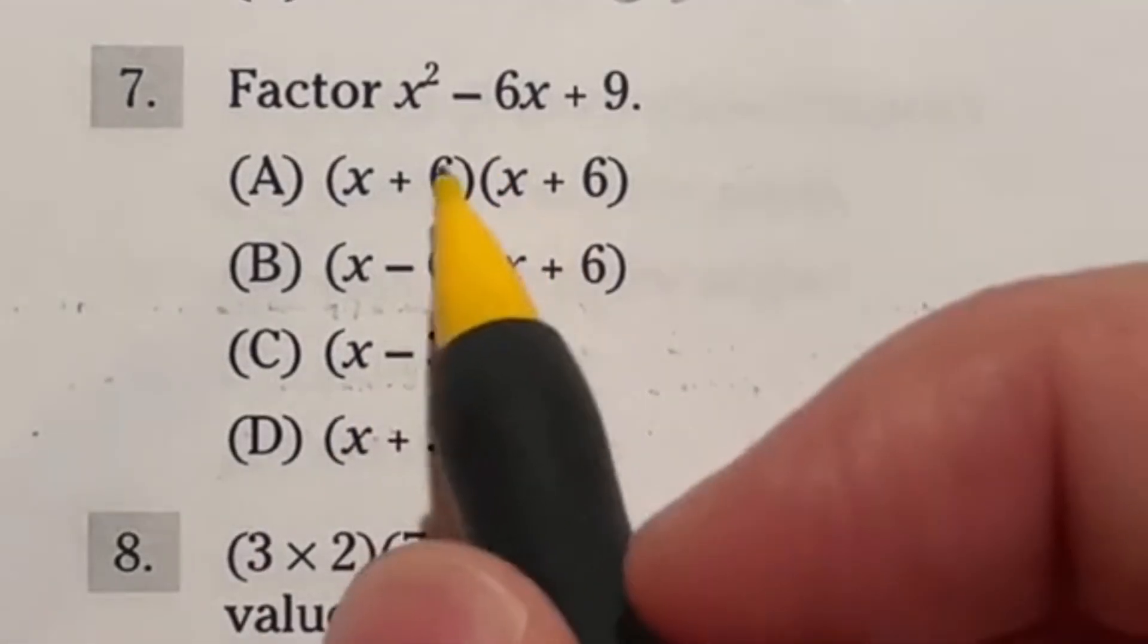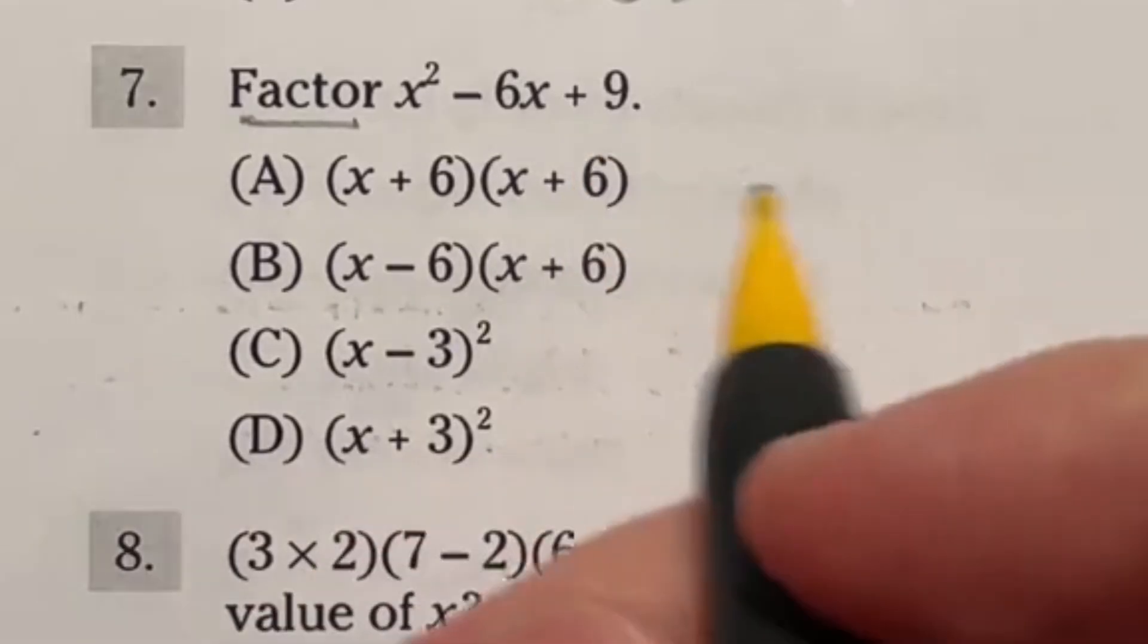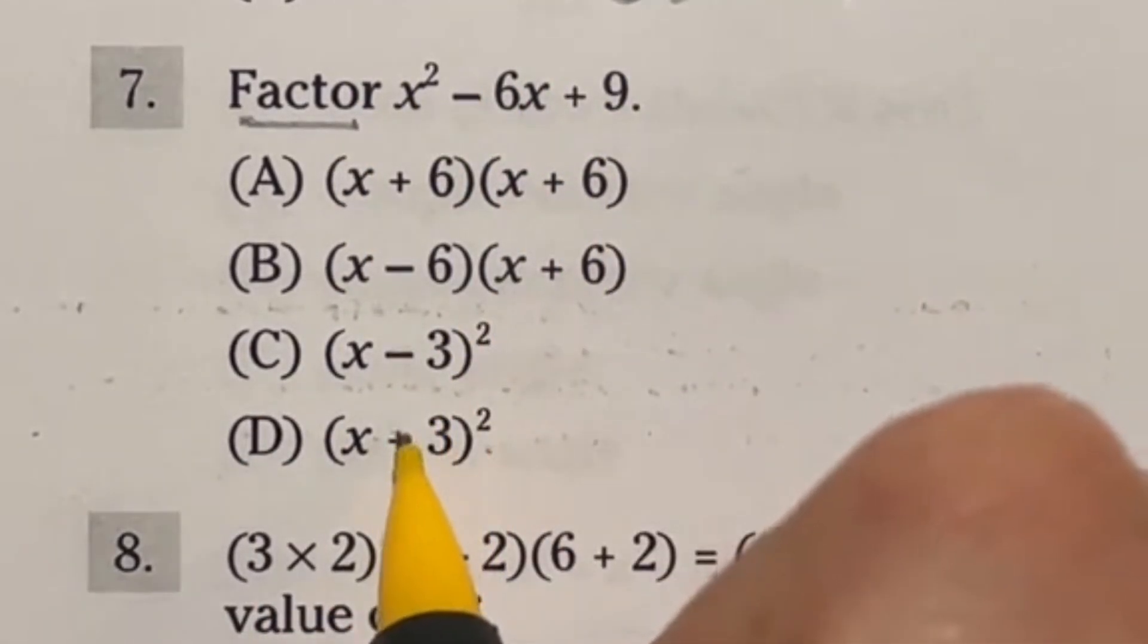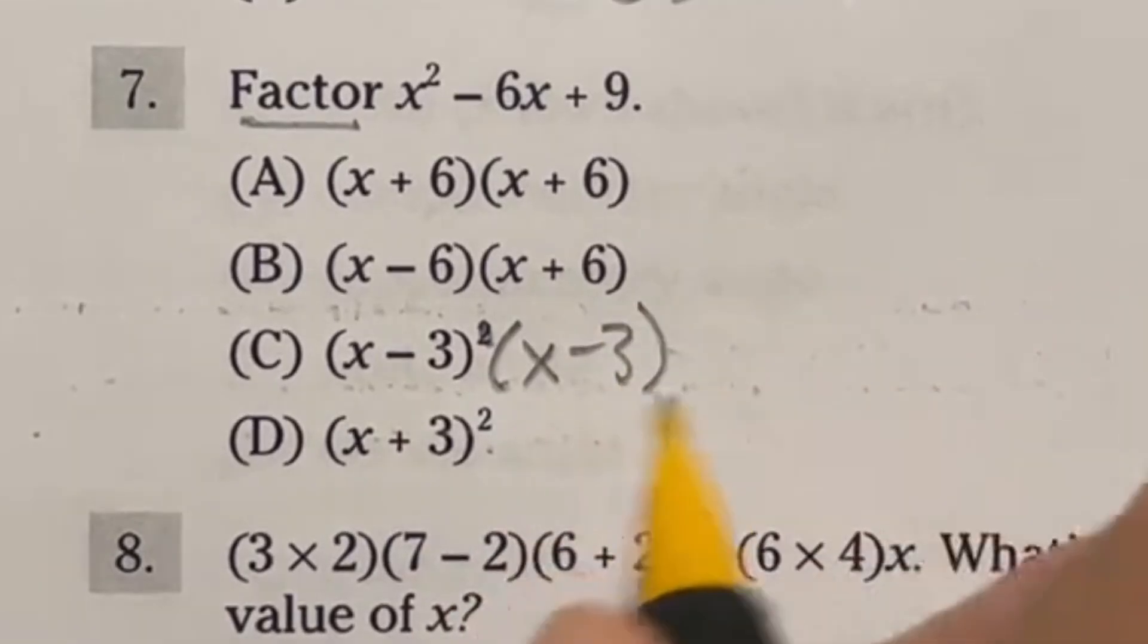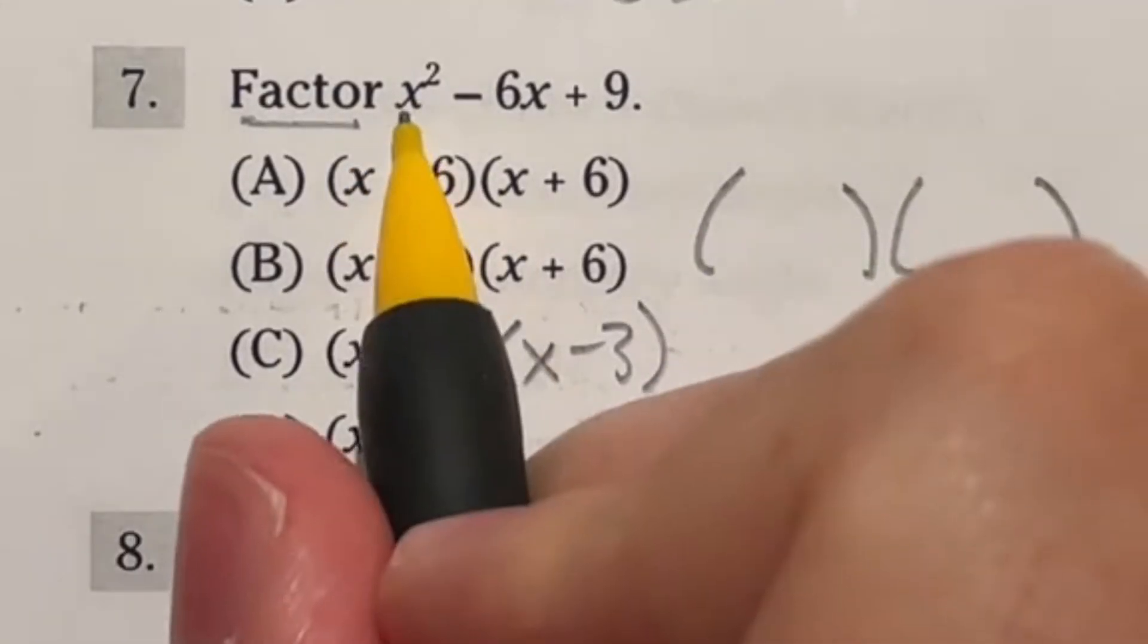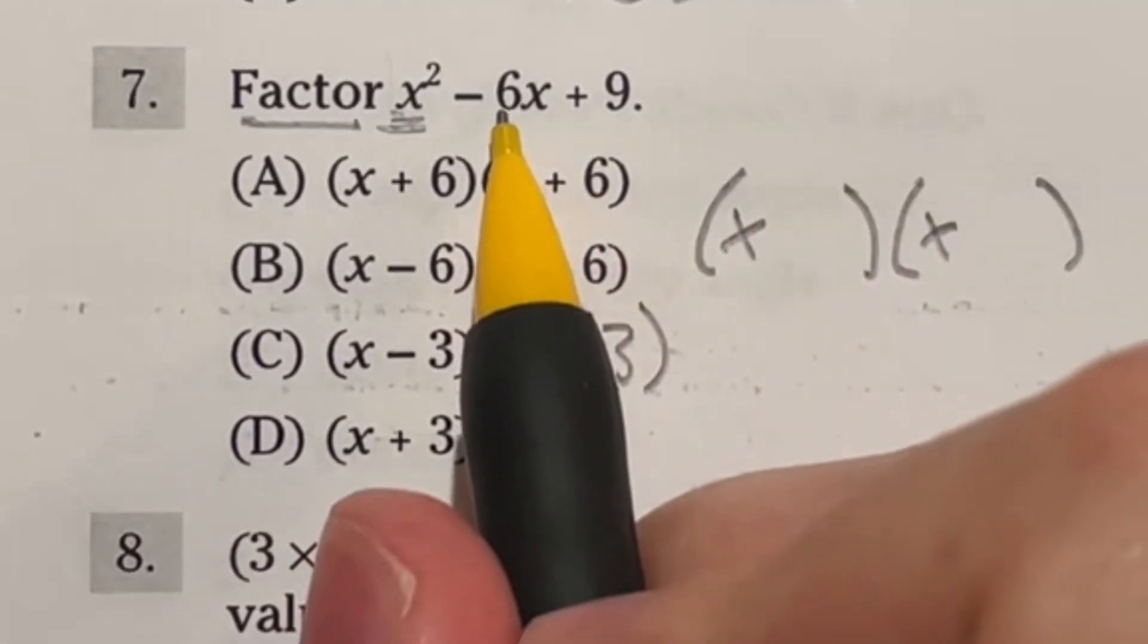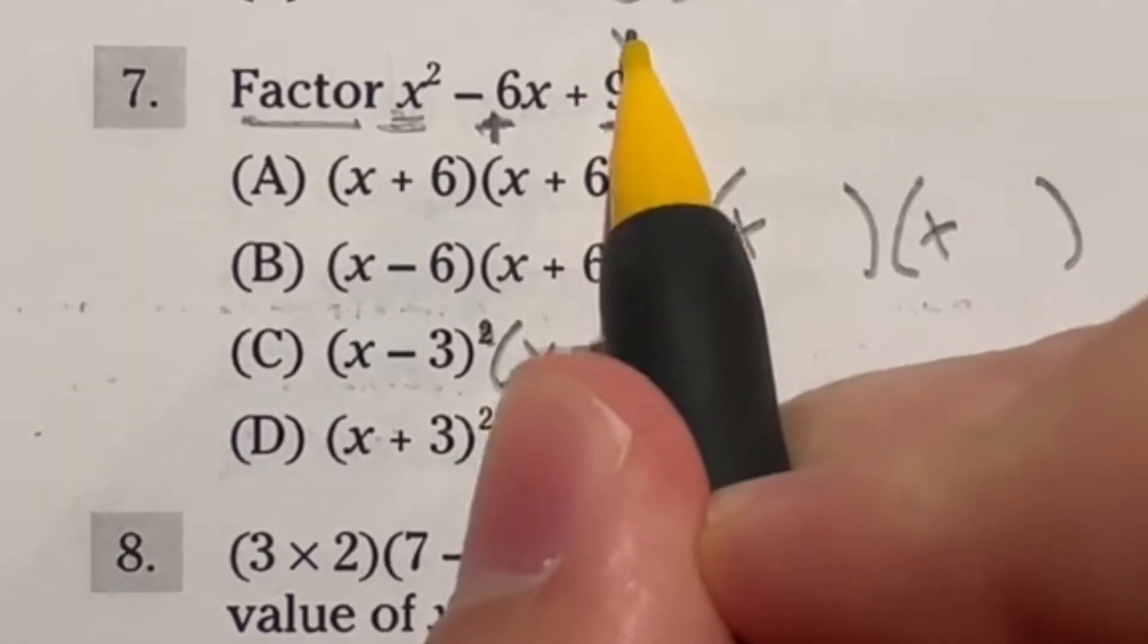Your standard end of algebra one question here says to factor x squared minus 6x plus 9. Now what does it mean to factor something? It means that you have to find two things when multiplied by each other will give you this as an answer. Anytime you see the square, that means you're just doing that twice. So this would just be x minus 3 times x minus 3. We've got to separate this in two sets of parentheses. Usually you take this first guy and split it in half, so that's just going to be x times x. Now you have to find two numbers that multiply to this number and add to this number.